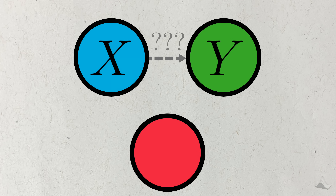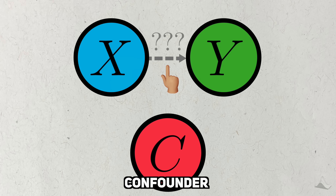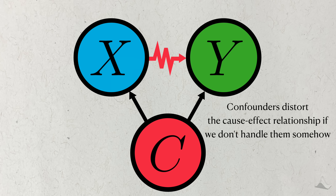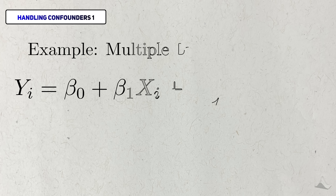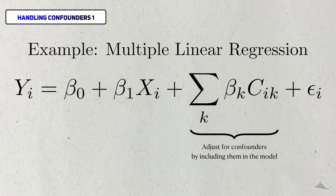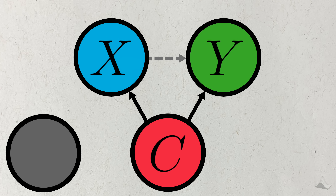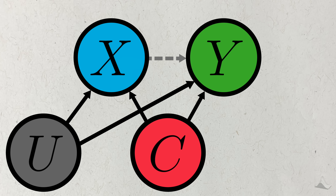A major obstacle to finding one is the confounder. If we're trying to figure out if a relationship exists between a potential cause and an outcome, then the confounder is any variable that's associated with both of them. I'll indicate a relationship between two random variables with an arrow. Confounders will distort the relationship between X and Y, whether or not there's an actual relationship between them. One solution is to just adjust for them in our statistical model, but it's impossible to know if we've collected all the confounders. There will always be the possibility of an unobserved confounder that we missed or don't even know exists.